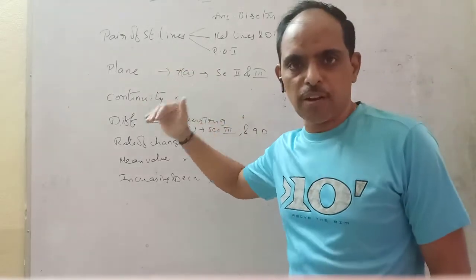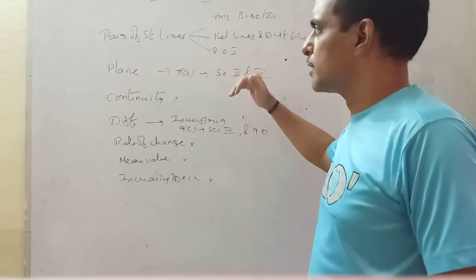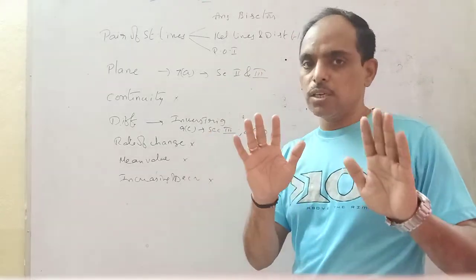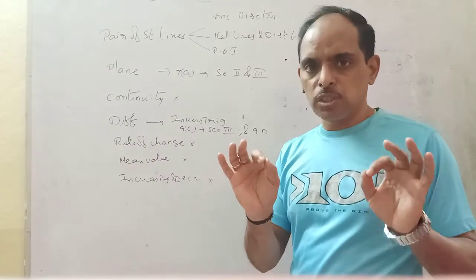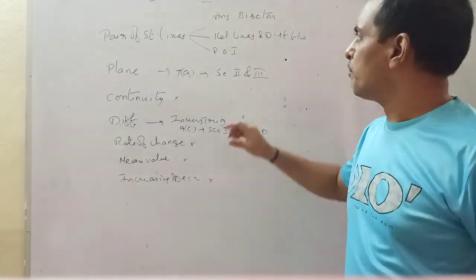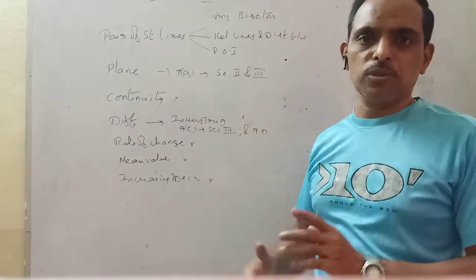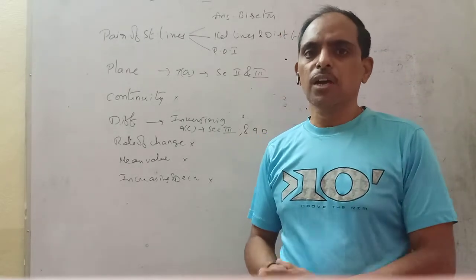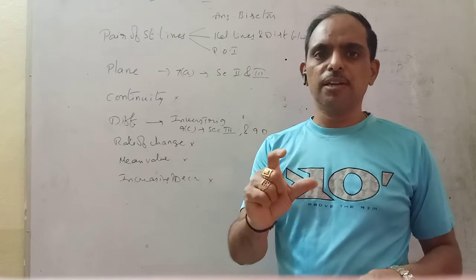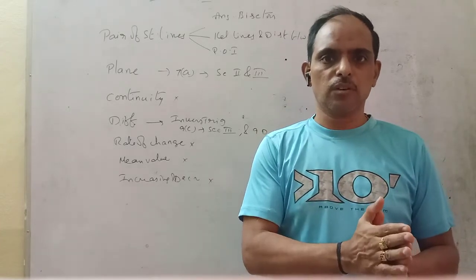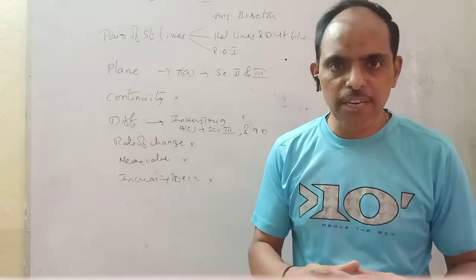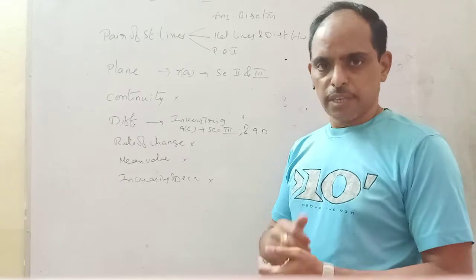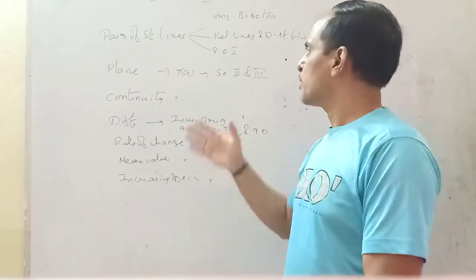Next, the topic of pair of straight lines. Coming to pair of straight lines, some concepts have been reduced — not all concepts, only certain ones. The angular bisectors theorem: h into x-squared minus y-squared equals a minus b of xy — the angular bisectors theorem and its related problems from exercise 4A are deleted and reduced.